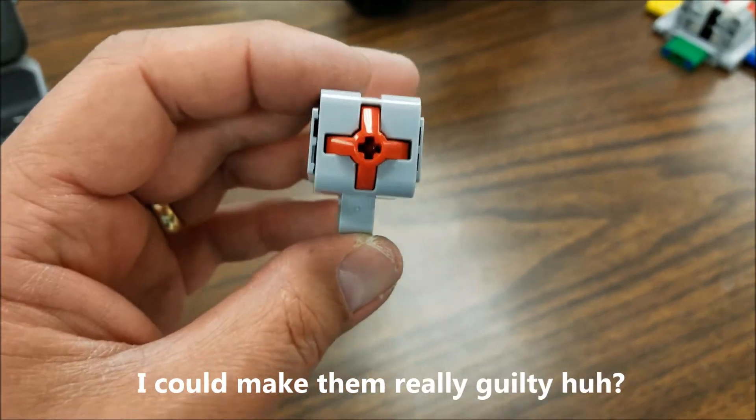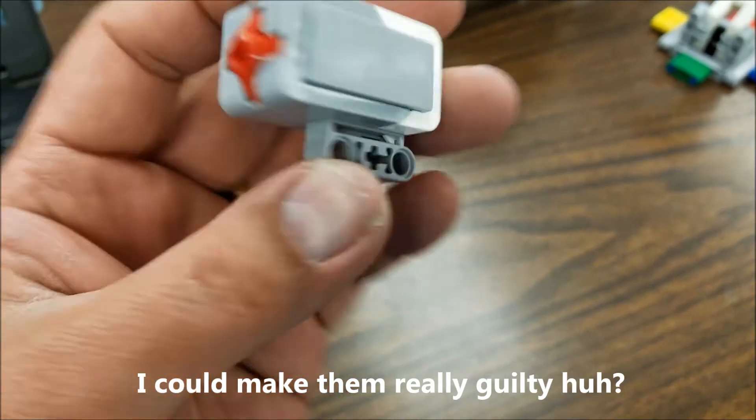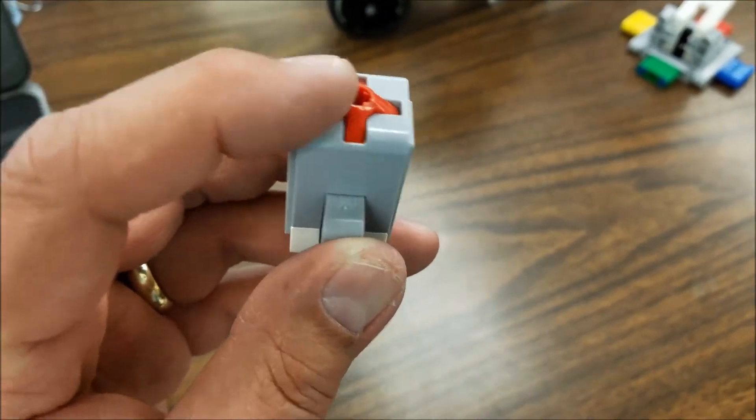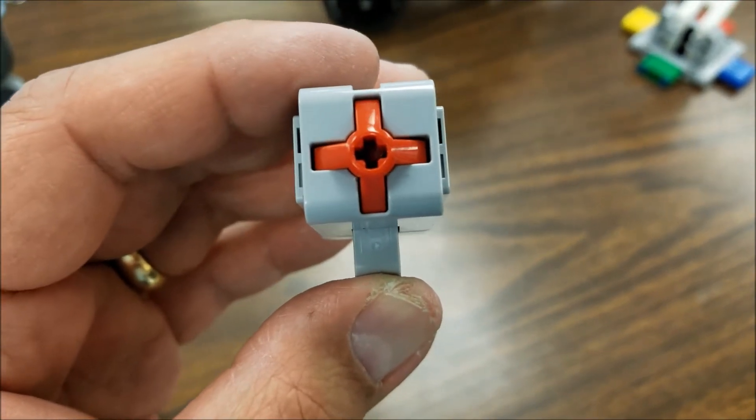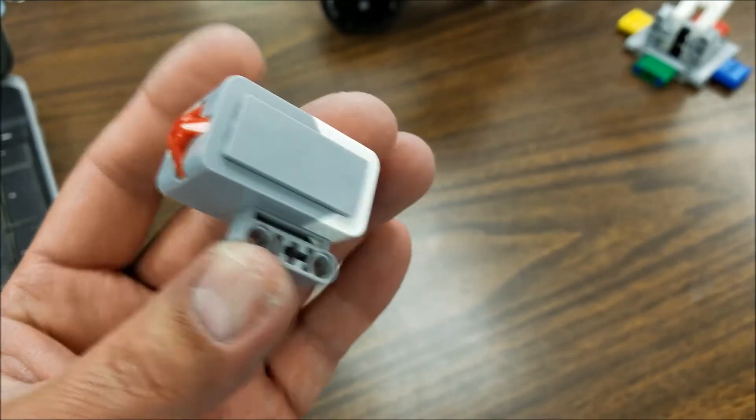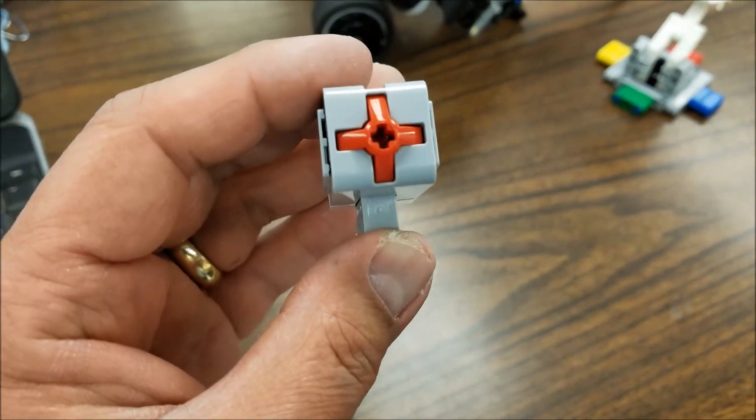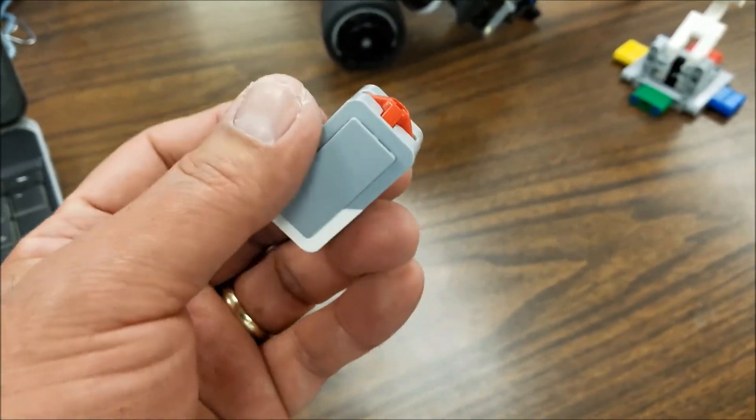But anyway, there you go, there's the fix. If you ever have this red button of the touch sensor come out, you just make sure you have it facing the right way when you put it back in. I don't know if you'll ever encounter a broken touch sensor like that again, but if you do, there's how you fix it.